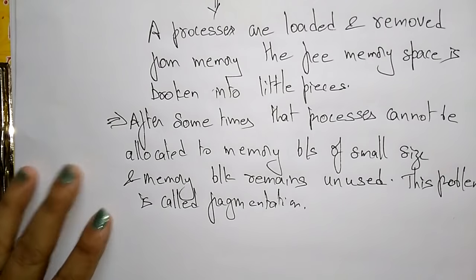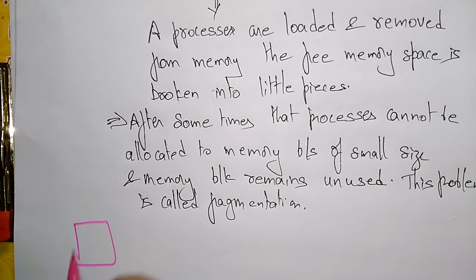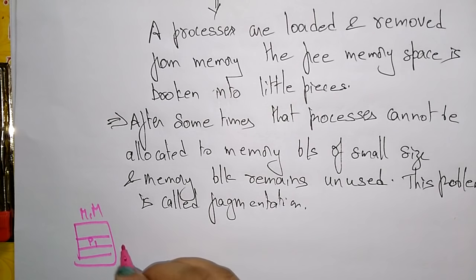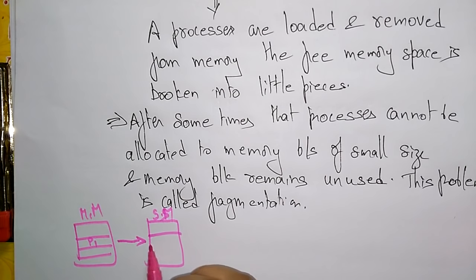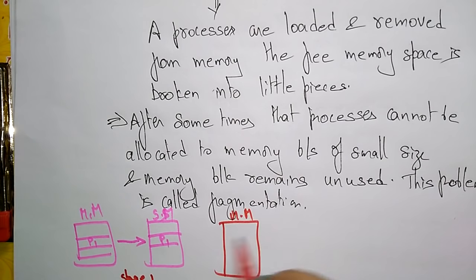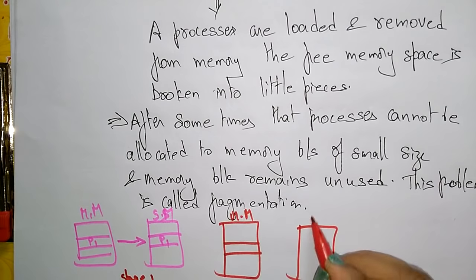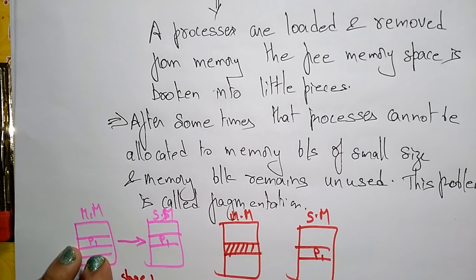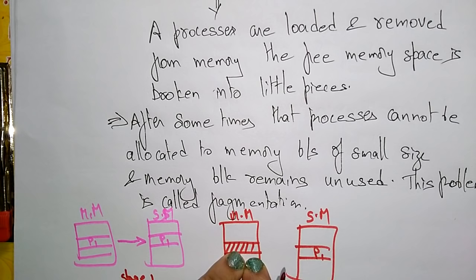Let me explain clearly with a simple example. This is a main memory holding process P1. A process is loaded in main memory and removed from main memory and stored into secondary memory. After storing in secondary memory — this is stage one. Here, the process P1 is stored in secondary memory, and whatever the process that is removed from main memory becomes free space. Since P1 was moved to secondary memory, this becomes free space.